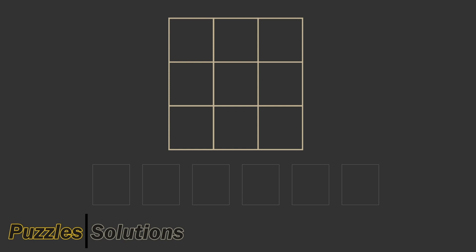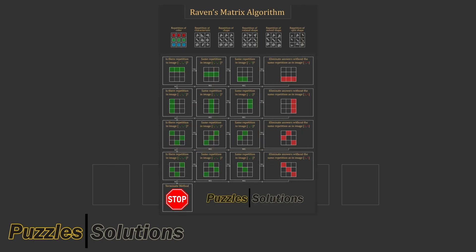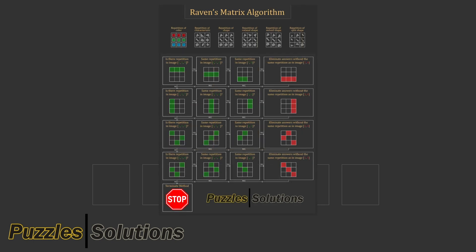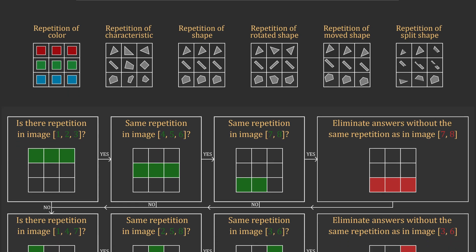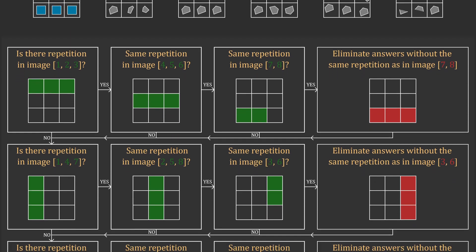I just finished the design of the algorithm. At the top we have the headline 'Raven's Matrix Algorithm,' followed by the six types of repetition: repetition of color, repetition of characteristic, repetition of shape, repetition of rotated shape, repetition of moved shape, and repetition of split shape. Under the types of repetition, we have the algorithm itself.